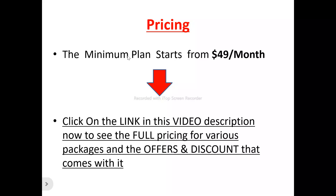Now to the pricing plans of Subscriber. The best minimum plan for each person with Subscriber is $49 per month. There's a link in this video description that you can click on to see the full pricing for the bigger packages, the offers, and as well as the discounts that they come with. You want to see different pricing plans that Subscriber has in store for you, with the different features, different capabilities, and what you can actually handle. The best minimum plan for each person with Subscriber is $49 per month.